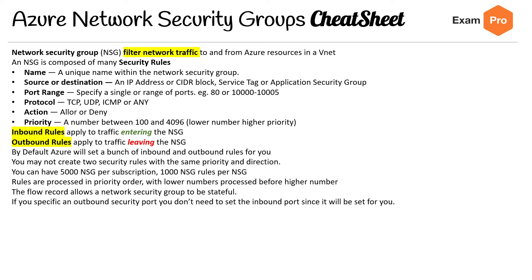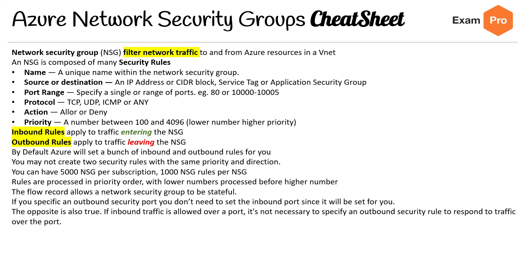If you specify an outbound security port, you don't need to set the inbound port since it will be set for you. The opposite is also true: if inbound traffic is allowed over a port, it's not necessary to specify an outbound security rule to respond to traffic over that port.